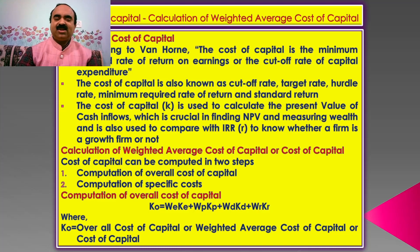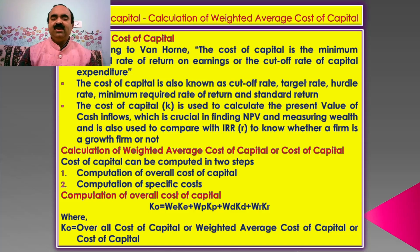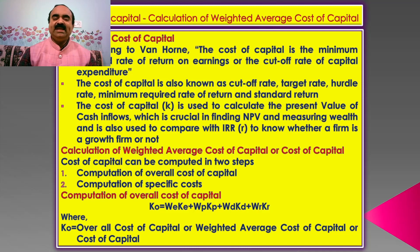Meaning of cost of capital: According to Van Horn, the cost of capital is the minimum required rate of return on earnings, or the cut-off rate of capital expenditure. The cost of capital is also known as cut-off rate, target rate, hurdle rate, minimum required rate of return, and standard return. The cost of capital K is used to calculate the present value of cash inflows, which is crucial in finding net present value and measuring wealth, and is also used to compare with IRR, which is known as R, to know whether a firm is a growth firm or not.